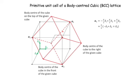So vector A1 can be expressed as: A1 = (−A/2)E1 + (A/2)E2 + (A/2)E3, or equivalently A/2 times (−E1 + E2 + E3). Similarly, A2 = A/2 (E1 − E2 + E3) and A3 = A/2 (E1 + E2 − E3).